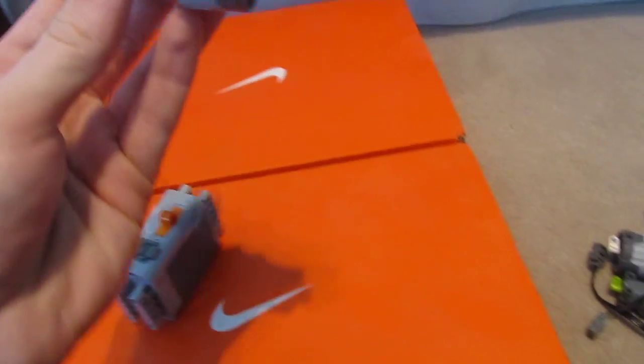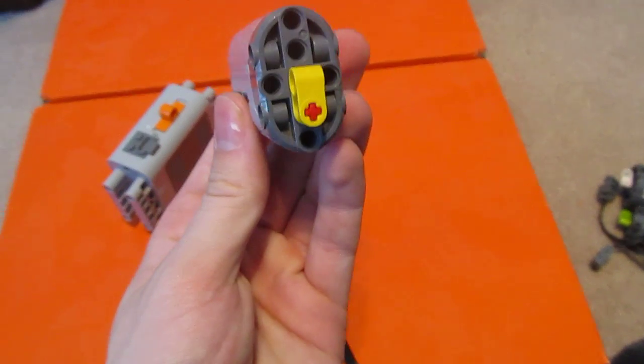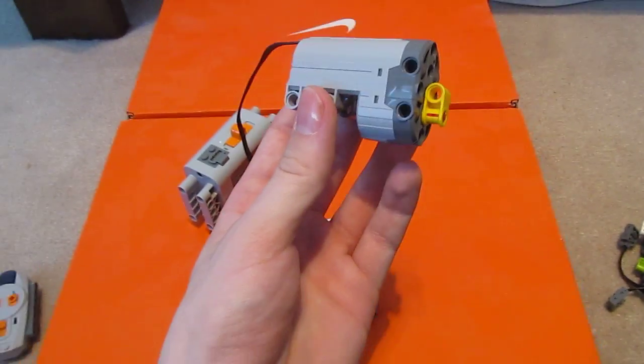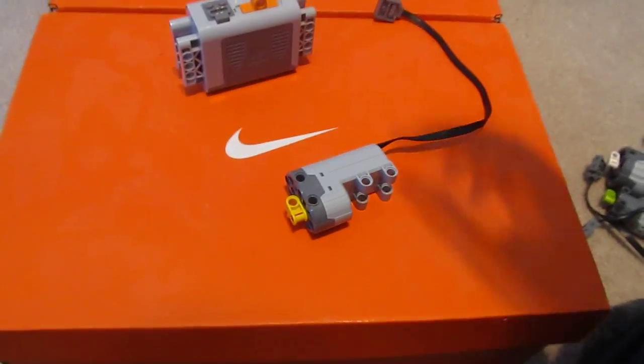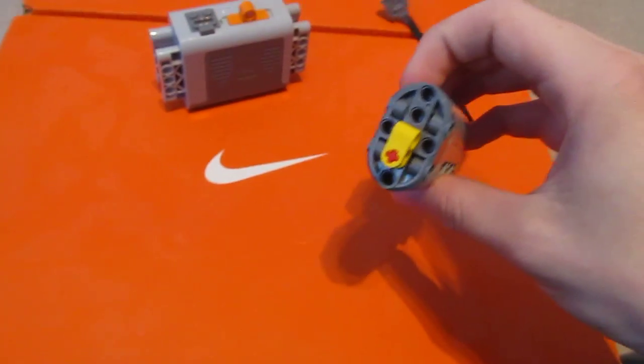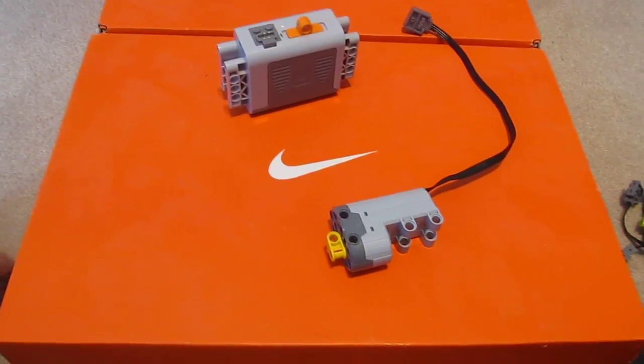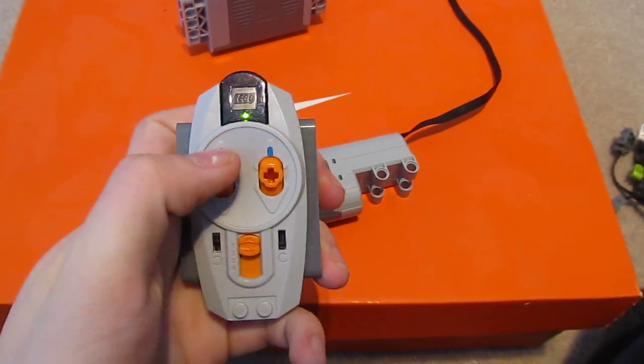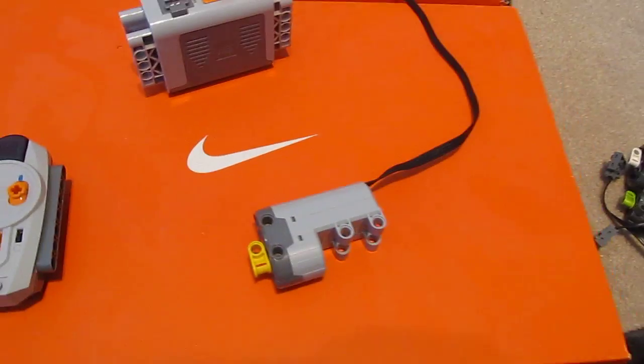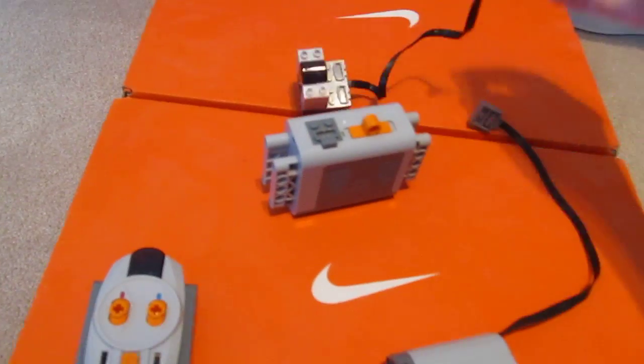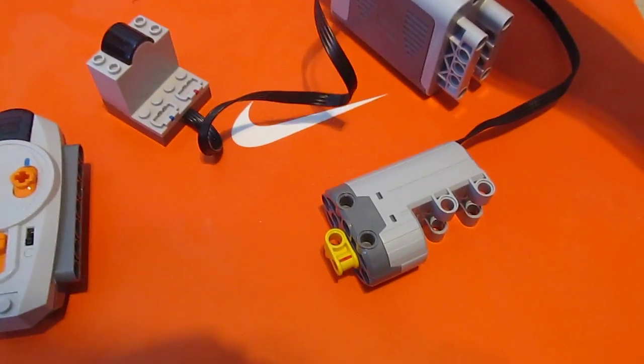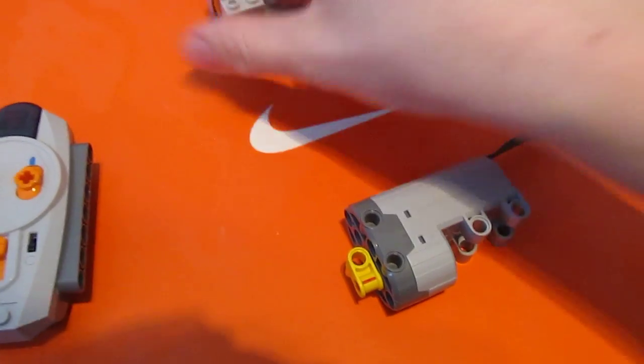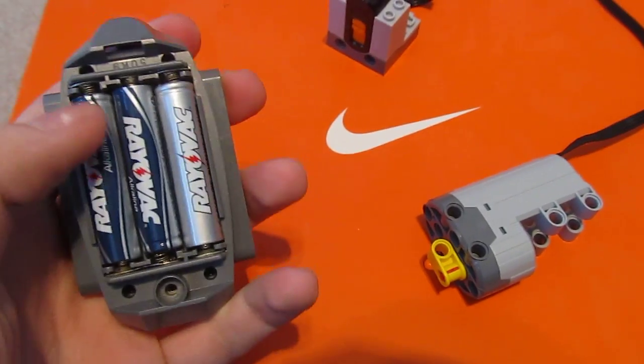Next up is the wicked cool servo motor. This thing is awesome. This motor is designed to actually be used with the actual IR receiver and the remote. This is a good segue into this part of the film. Let's attach the IR receiver, and this actually uses three AAA batteries.